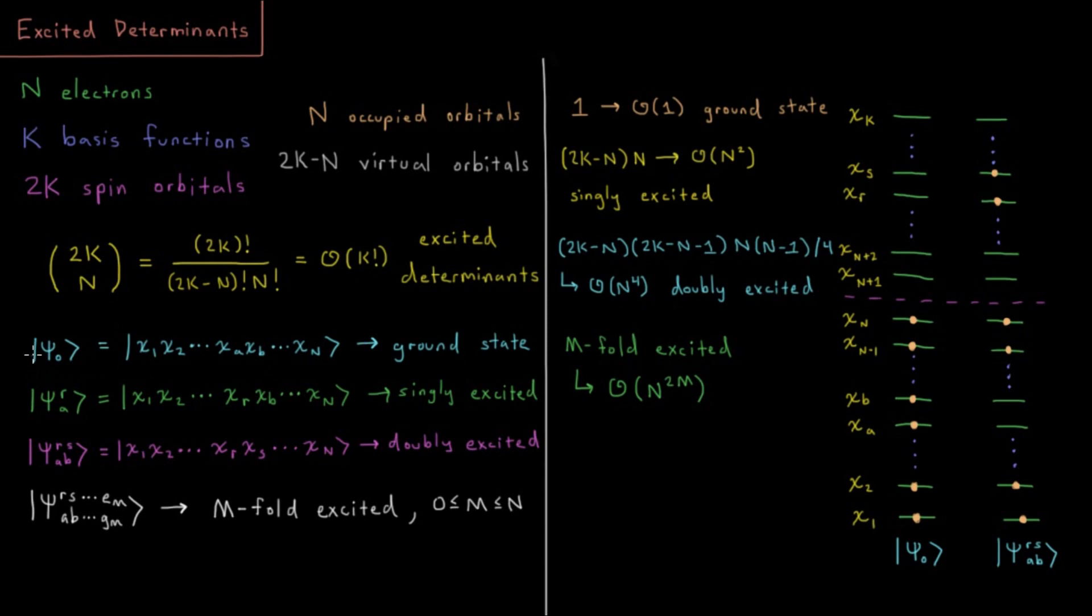So as I mentioned, the case where we take electron 1 put it in orbital 1, electron 2 in orbital 2, etc., where we have the n electrons in the lowest n available spin orbitals, that's called our ground state.